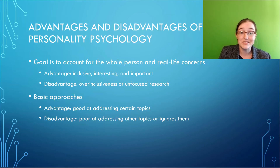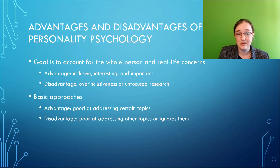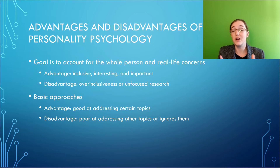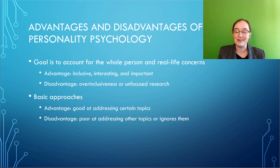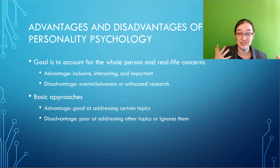The goal for personality psychology is to account for the whole person and those real-life concerns. There are a lot of advantages to having this broad goal — it's inclusive, it's really interesting, and it's obviously important. But at the same time, it can be super over-inclusive, and you never know where to cut your research paper down or where to stop. It can also lead to unfocused research.